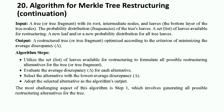The input is a tree or tree fragment with the root, intermediate nodes, and leaves; the probability distribution and frequencies of those leaves; and a set of leaves available for reconstruction, plus a new leaf or new probability distribution for all tree leaves. The output is a fragment of the restructured tree optimized according to the criteria of minimizing average disparity. The algorithm steps are: utilize the set of leaves available for reconstruction to formulate all possible reconstruction alternatives for the tree; evaluate the average disparity for each alternative; select the alternative with the lowest average disparity; and adopt the selected alternative as the algorithm output.